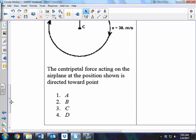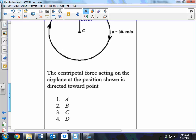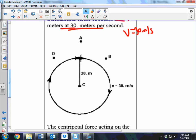The centripetal force acting on the airplane at the position shown is directed toward point blank. Now, I'm going to, you're going to pause the video before I give you the answer. But choose your answer now and pause the video. Or pause the video and then choose your answer. Yeah, that's what I meant. So anyways, remember, centripetal is center seeking, pointing towards the center.